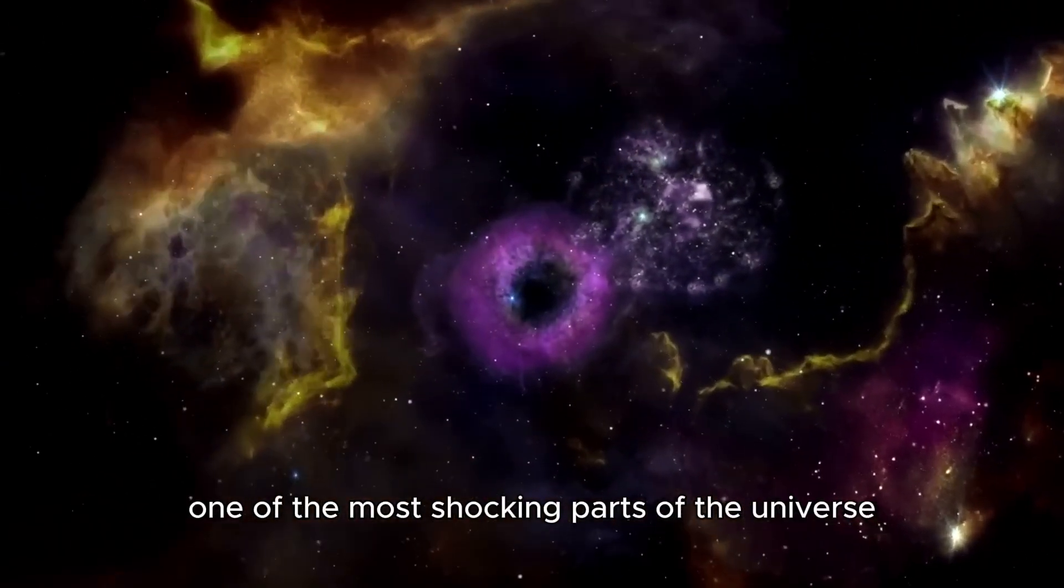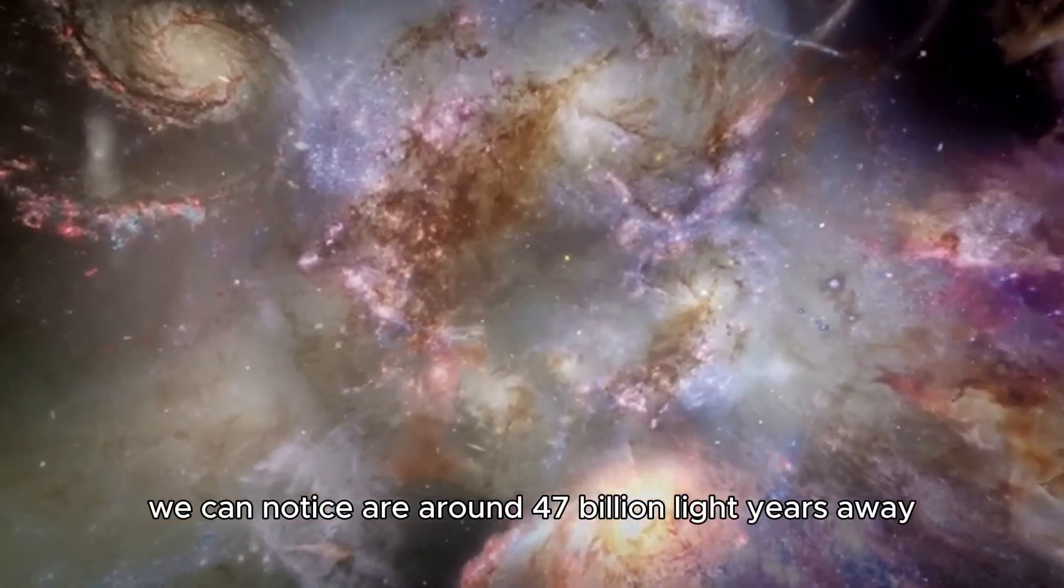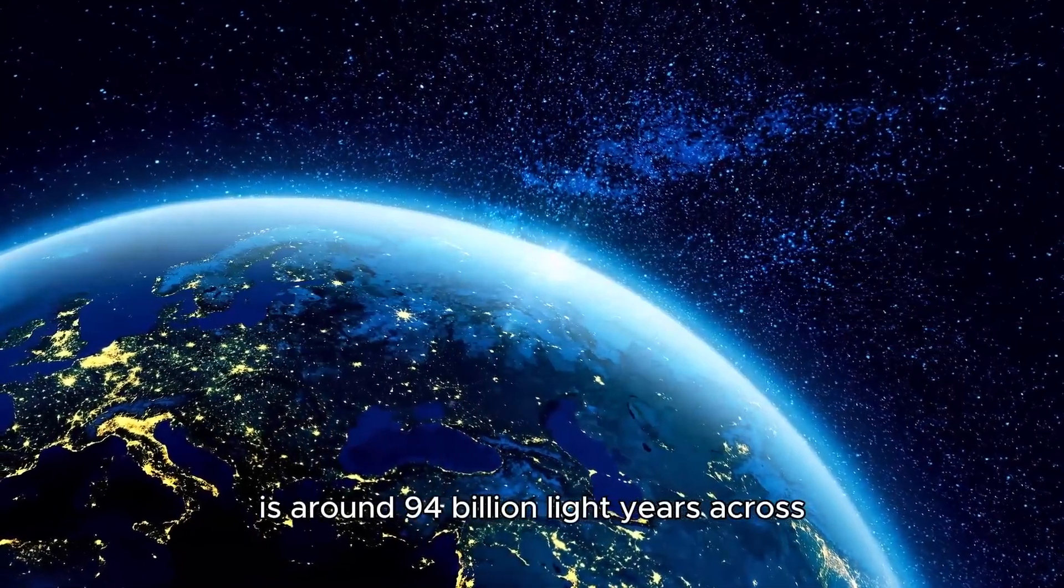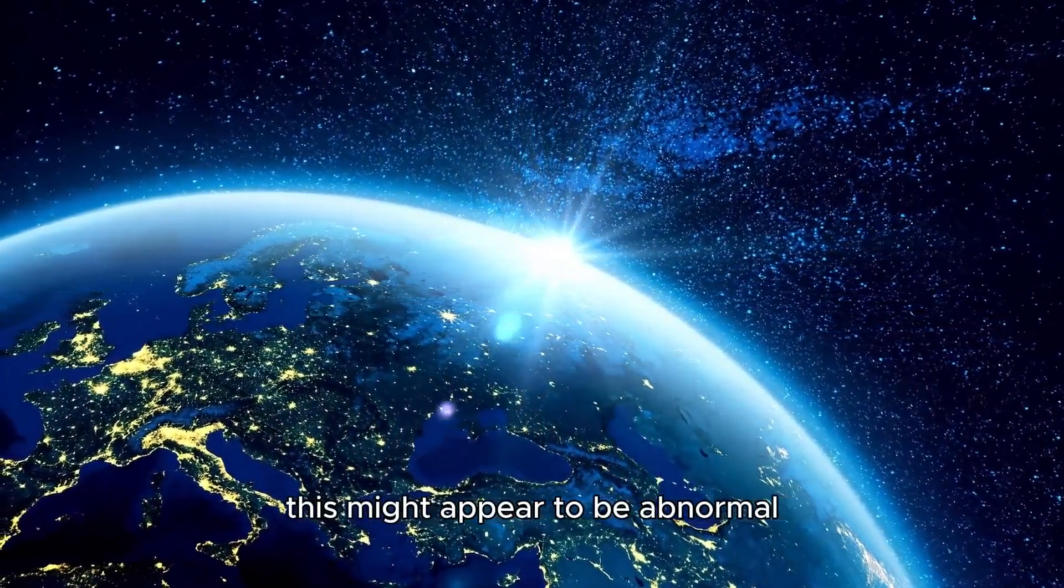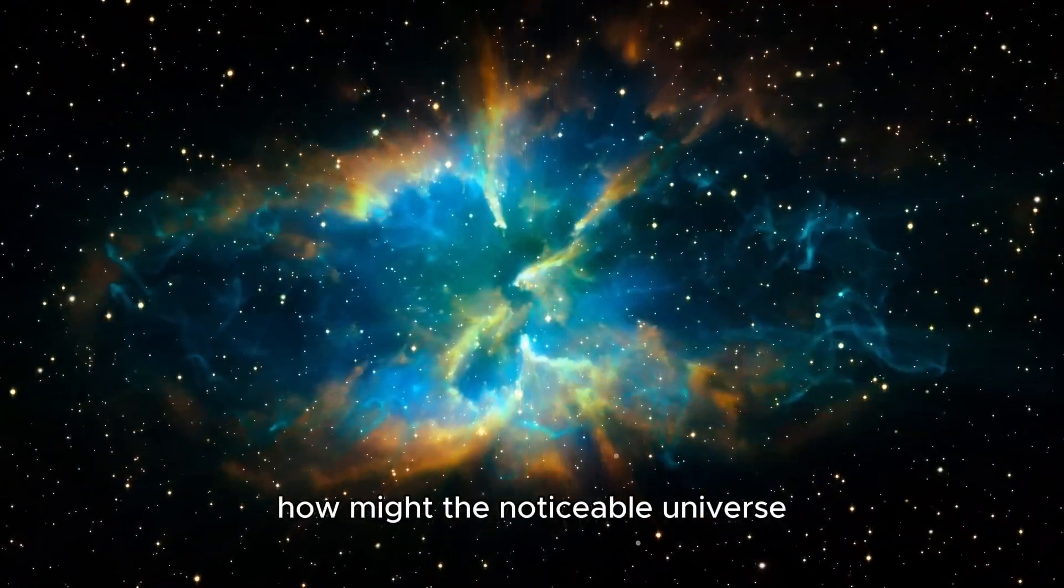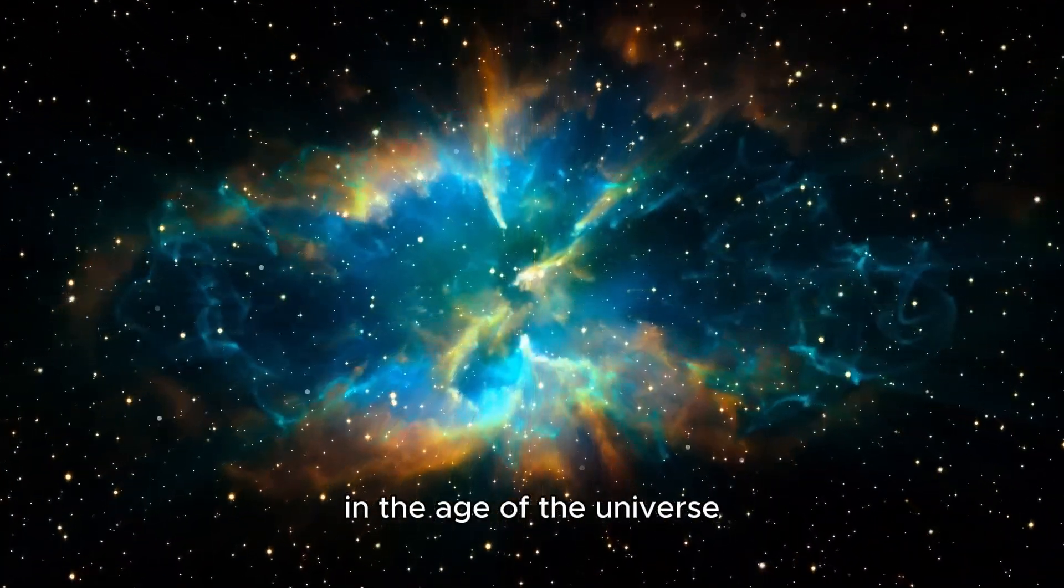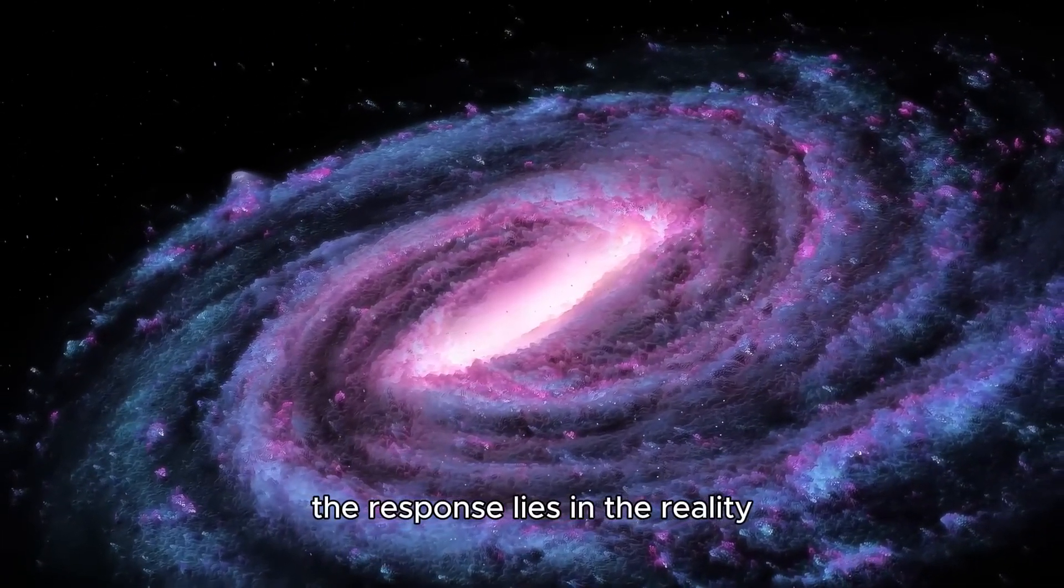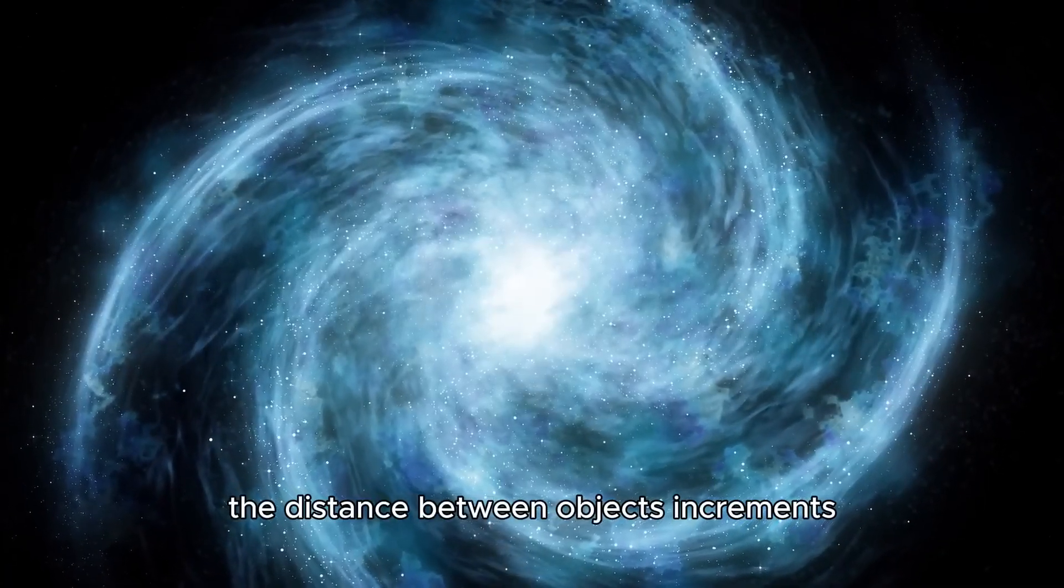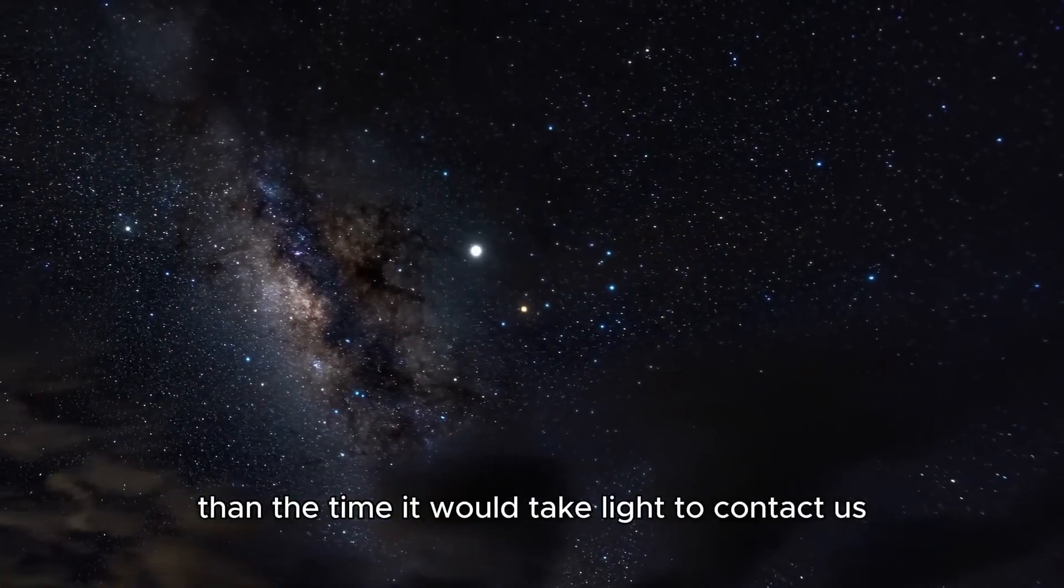One of the most striking aspects of the universe is its size. The most distant objects we can observe are around 47 billion light-years away, meaning the observable universe is around 94 billion light-years across. This might seem abnormal, given that the universe is only 13.8 billion years old. How might the observable universe be larger than the time it would take light to traverse it in the universe? The answer lies in the fact that the universe has been expanding over time. As the universe expands, the distance between objects increases, making distant objects farther away than the time it would take light to reach us.